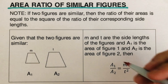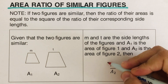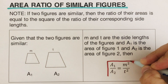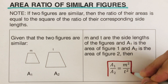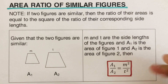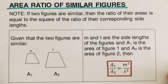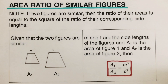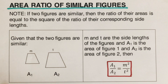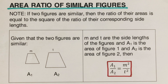A₁, the area of the first picture, over the area of the second figure, is equal to the square of the first side length over the square of the second side length — where the first side length is M and the second side length is T.